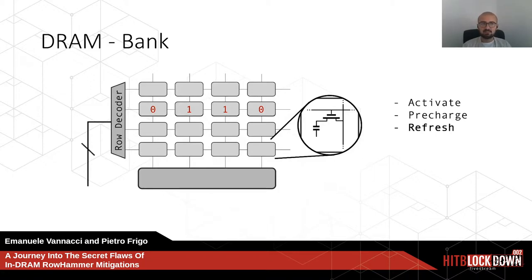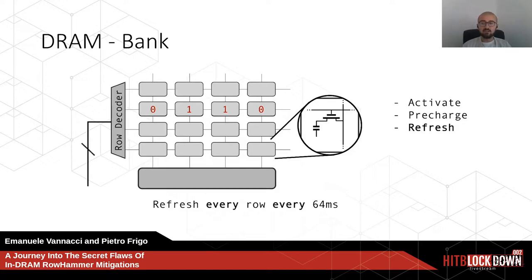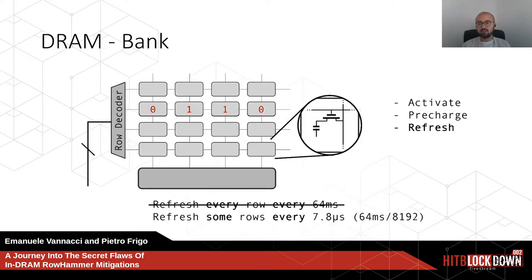Since data inside memory doesn't last forever because the capacitor leaks charges over time, the memory controller performs refresh operations — essentially an activate followed by a precharge — to maintain data for longer periods. By DRAM standard, memory vendors must provide a retention interval of at least 64 milliseconds, meaning every row must be refreshed every 64 ms. To avoid a denial-of-service, the memory controller batches refreshes, issuing them every 7.8 microseconds, a parameter known as TREFI.